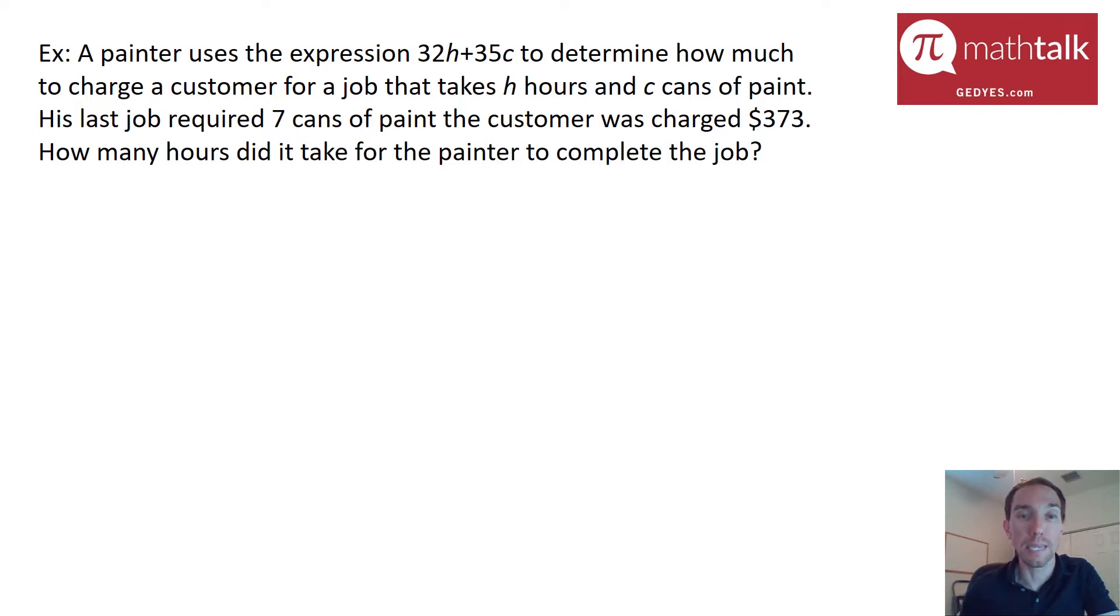The painter uses the same expression 32H plus 35C to determine how much to charge a customer for a job that takes H hours and C cans of paint. His last job required seven cans of paint and the customer was charged $373. How many hours did it take for the painter to complete the job?